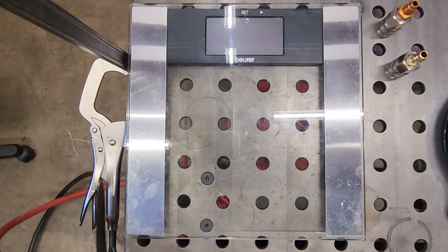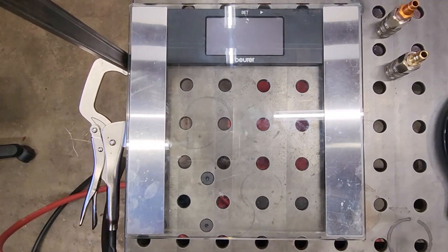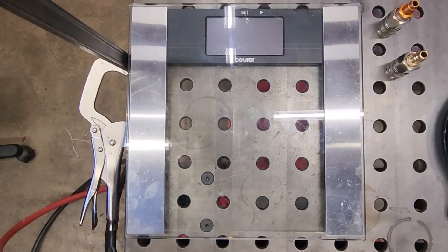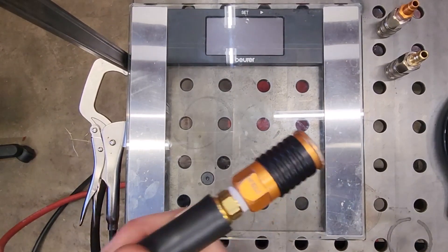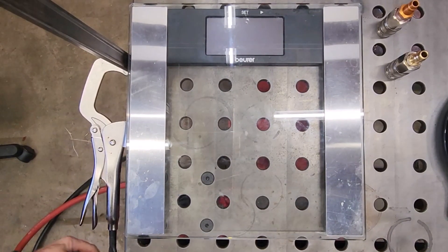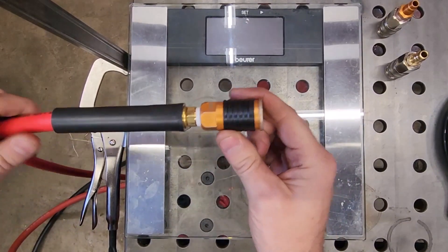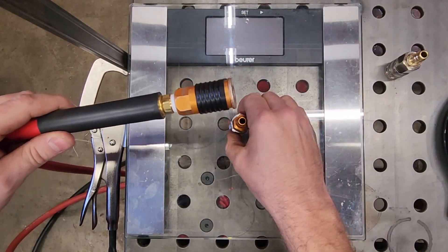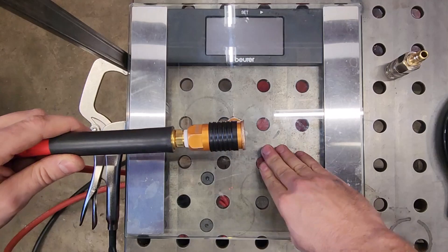And then finally, we'll use the Stedlin quick coupler, sorry about that, with a full flow plug. Let's see what those results look like.